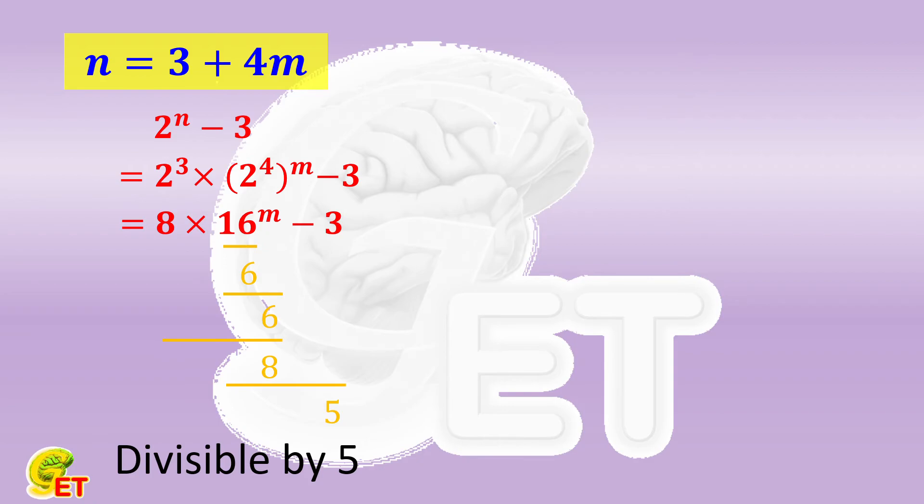Next, let's look at 3 to the nth power minus 2. For the same reason, it is equal to 3 to the 3rd power, then multiplied by 3 to the 4th power to the mth power, and minus 2. That is, 27 times 81 to the mth power minus 2.